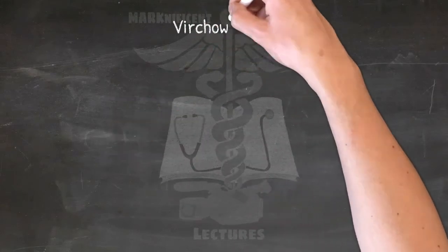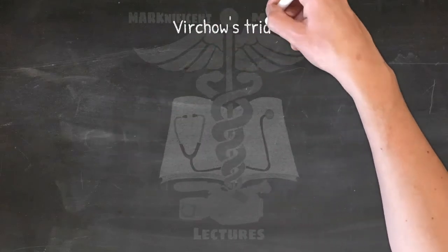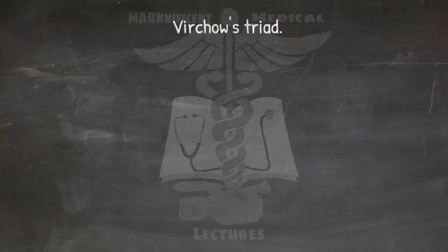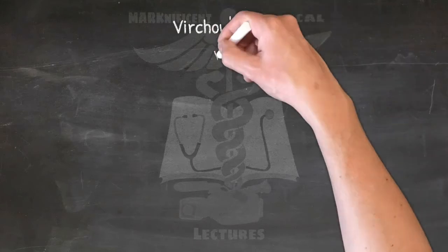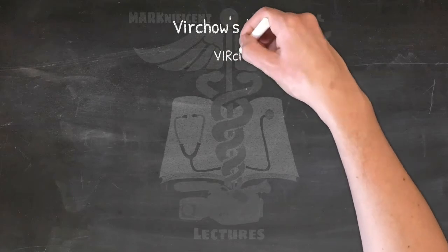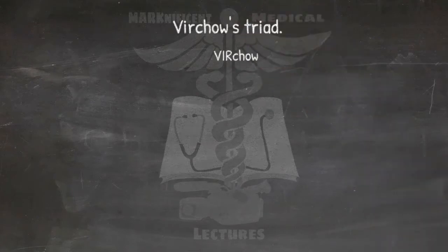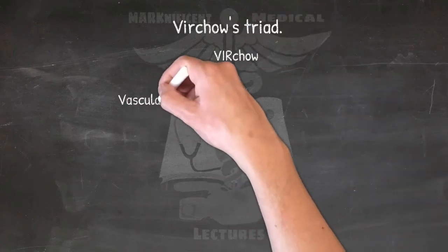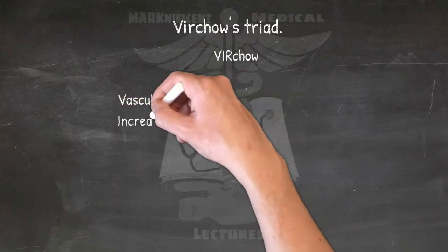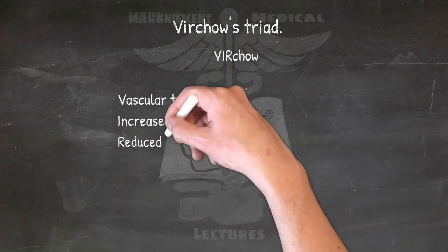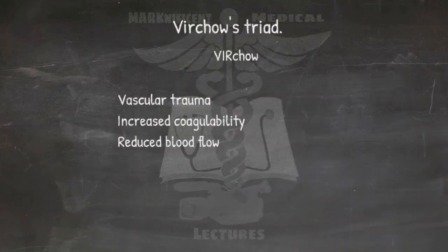Virchow's triad — venous thrombosis: these are three factors thought to contribute to thrombosis — Vascular trauma, Increased coagulability, and Reduced blood flow (stasis).